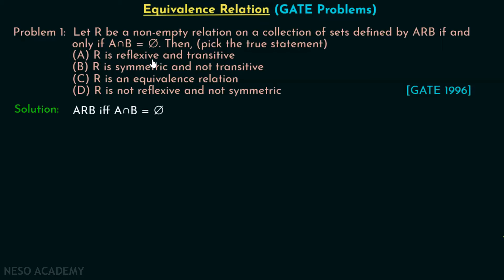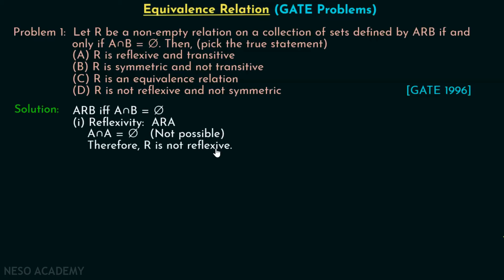Let's see the first option, which states R is reflexive and transitive. We will check whether R is reflexive. According to the reflexive property, A must be related to A, meaning A intersection A must be the empty set — which is obviously not possible. Therefore, R is not reflexive, and option A is straight away not the correct option.